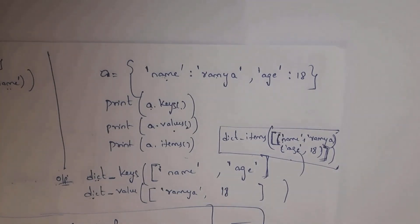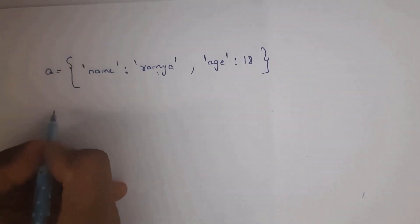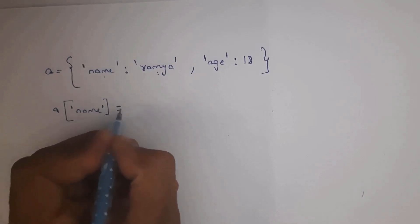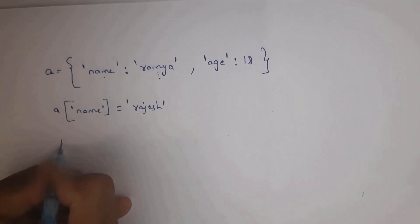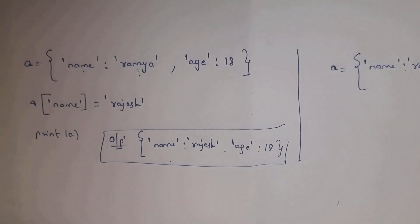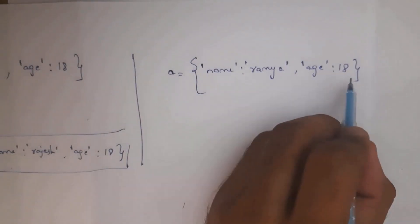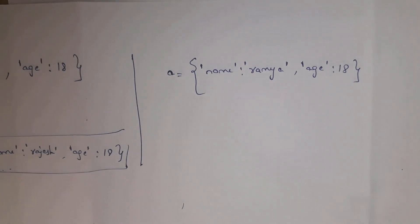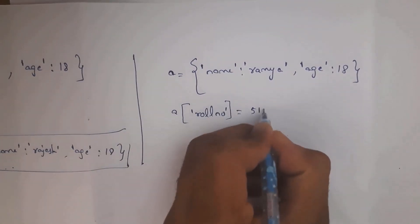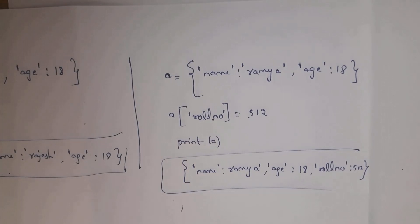To change a value in a dictionary, assign a new value using the key. For example, to change 'ramya' to 'rajesh', write a['name'] = 'rajesh'. After this, print(a) gives output {'name': 'rajesh', 'age': 18}. To add a new key-value pair, write a['roll_number'] = 512. Then print(a) gives {'name': 'ramya', 'age': 18, 'roll_number': 512}.